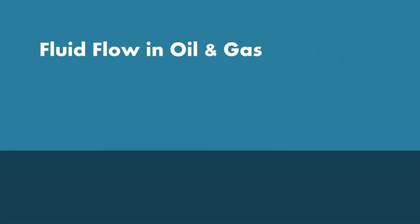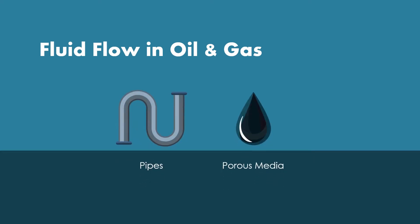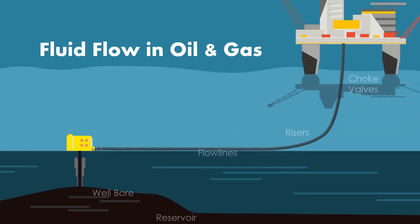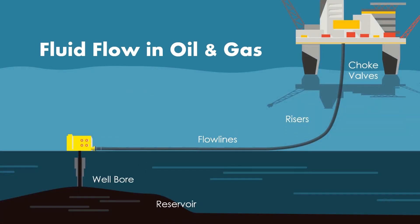This topic is very important as most of the things that we do in oil and gas industry typically involve fluid flow, either in pipes or in porous media. For example, in a typical petroleum production system, the crude oil flows from the reservoir all the way to the separator in the surface, through wellbore, through flow lines, through risers, and along the lines it will also have to flow through choke valves.